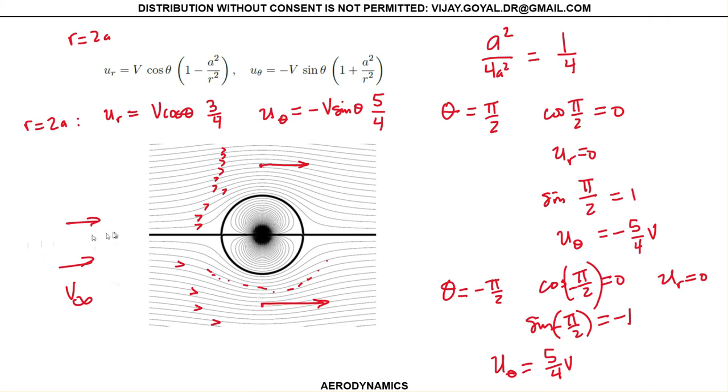It kind of makes sense, right? The flow is coming here, splitting at the top and splitting at the bottom. So this is how we will find the flow around a cylindrical coordinate system.